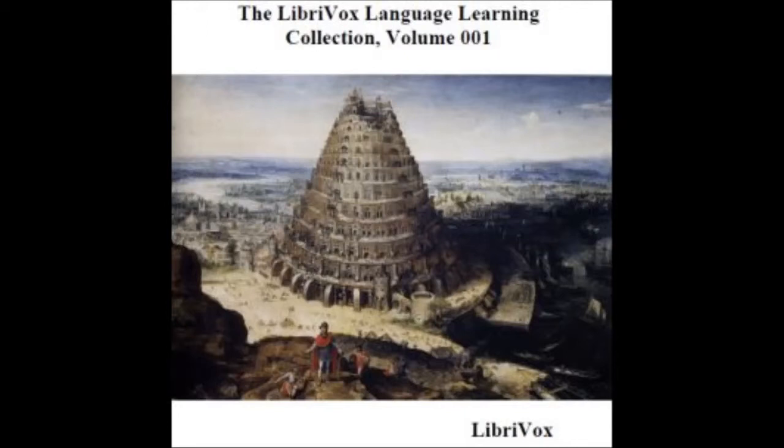M has always the same sound, as murmur, monumental. N has always the same sound, as noble, manners. N is sometimes mute after M, as damm, condemn, him. P has always the same sound, which the Welsh and Germans confound with B. P is sometimes mute, as in psalm, and between M and T, as tempt. PH is used for F in words derived from the Greek, as philosopher, philanthropy, Philip.